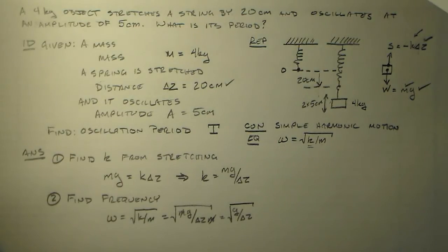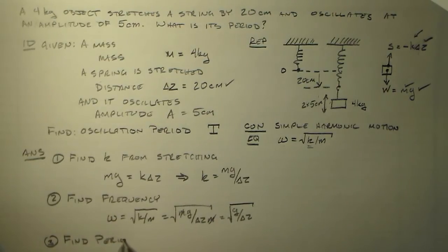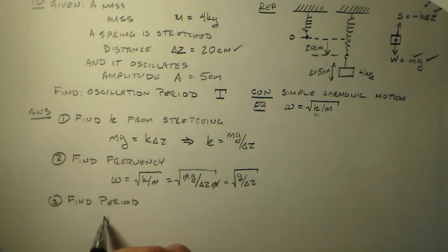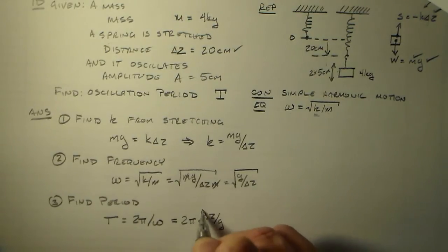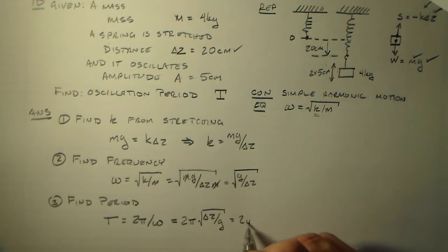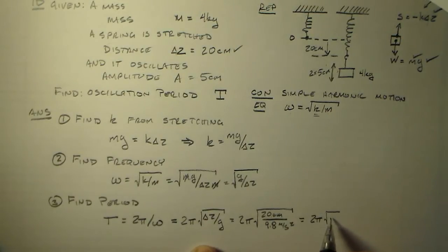We need the period, right? Not the frequency. But of course, the period is just, let's get a little more room, is equal to 2 pi over omega. Here it is 2 pi over the frequency. It's the inverse of the frequency. So that's equal to 2 pi times delta z over g, instead, is equal to 2 pi times delta z is 20 centimeters. And g is 9.8 meters per second squared. So that's 0.2 meters. If I do all this together, that's 2 pi root 49, it looks like, seconds.